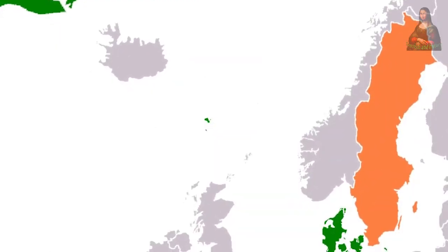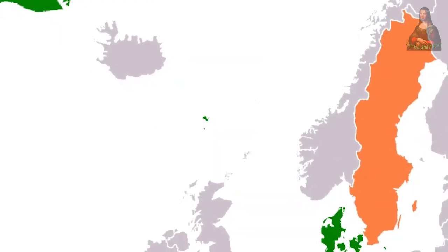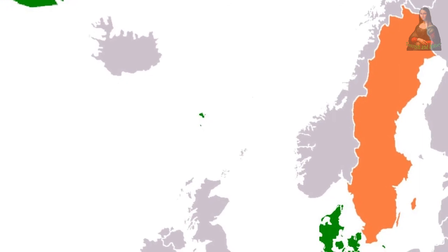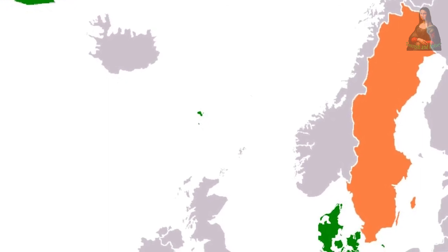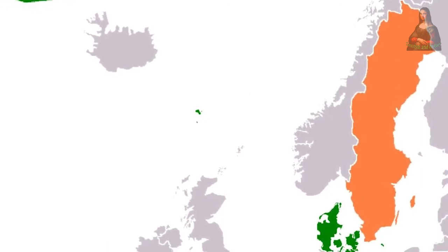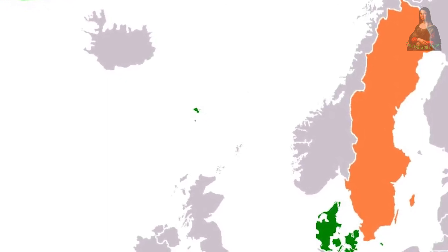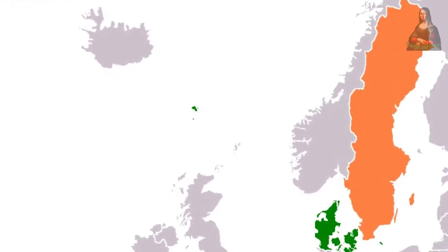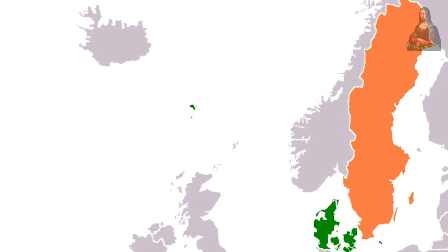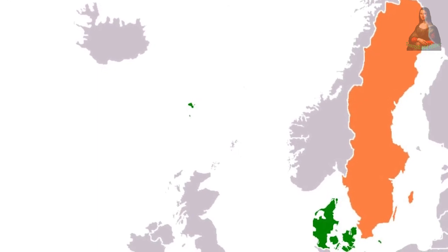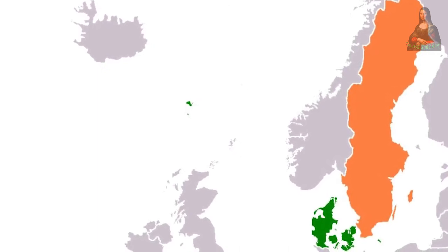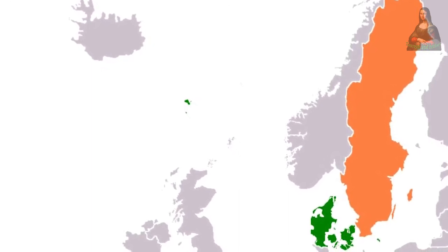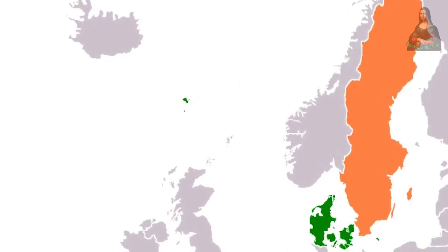In the year 1523, Sweden exited from this union, and Denmark remained in a bilateral union with Norway until the year 1814, after which the separation took place between them.